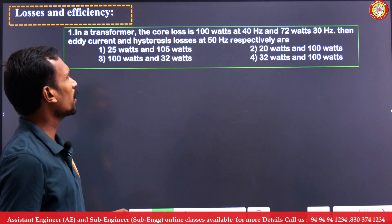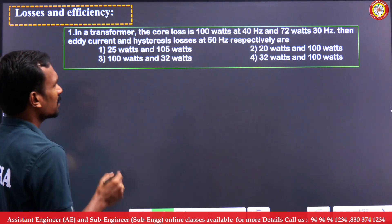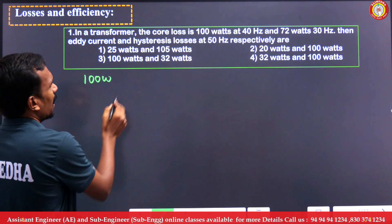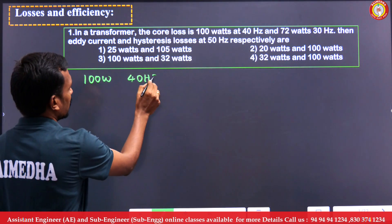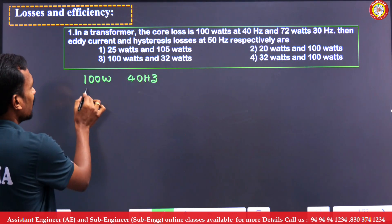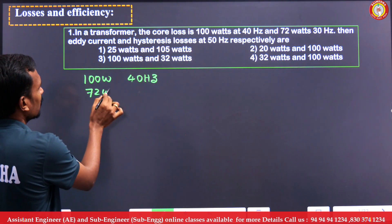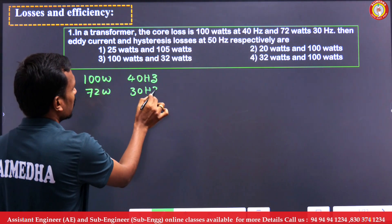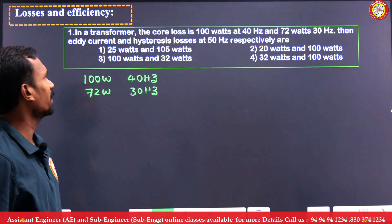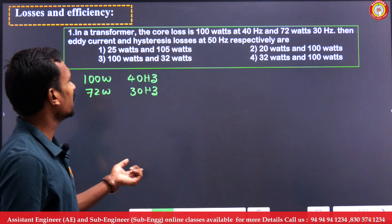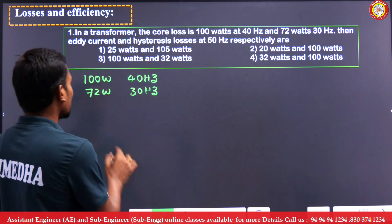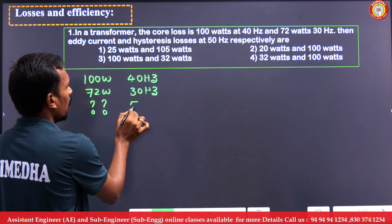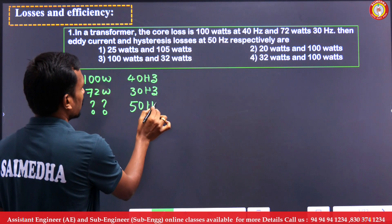First question: in a transformer, the core losses are 100 watts at 40 Hz supply frequency, and 72 watts at 30 Hz supply frequency. We need to find the eddy current and hysteresis losses at 50 Hz supply frequency.